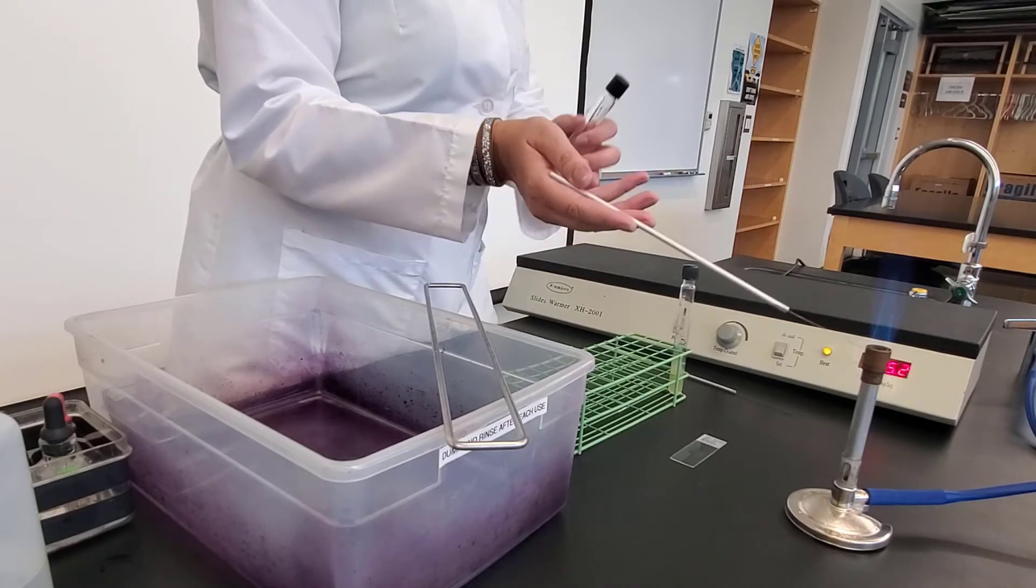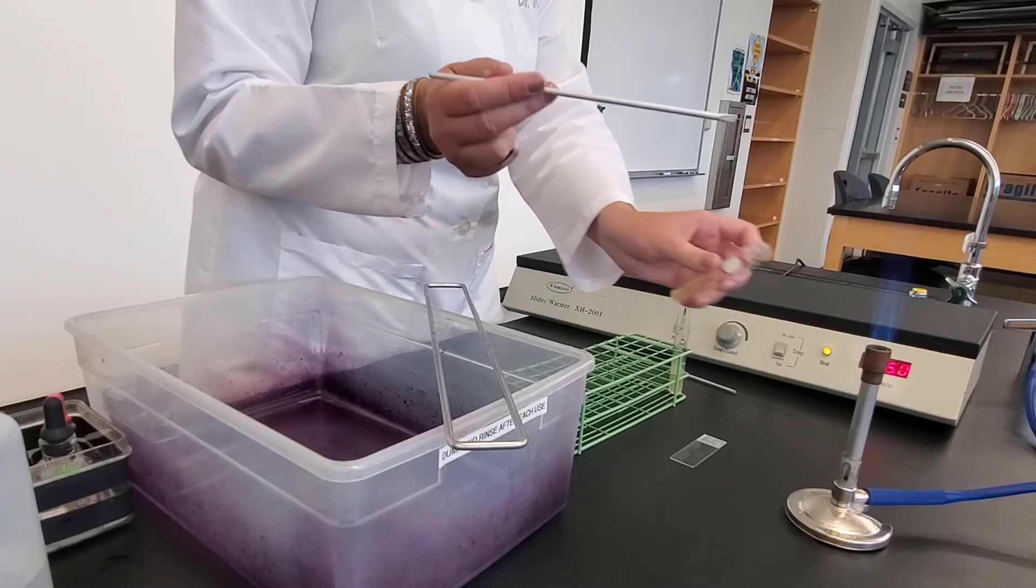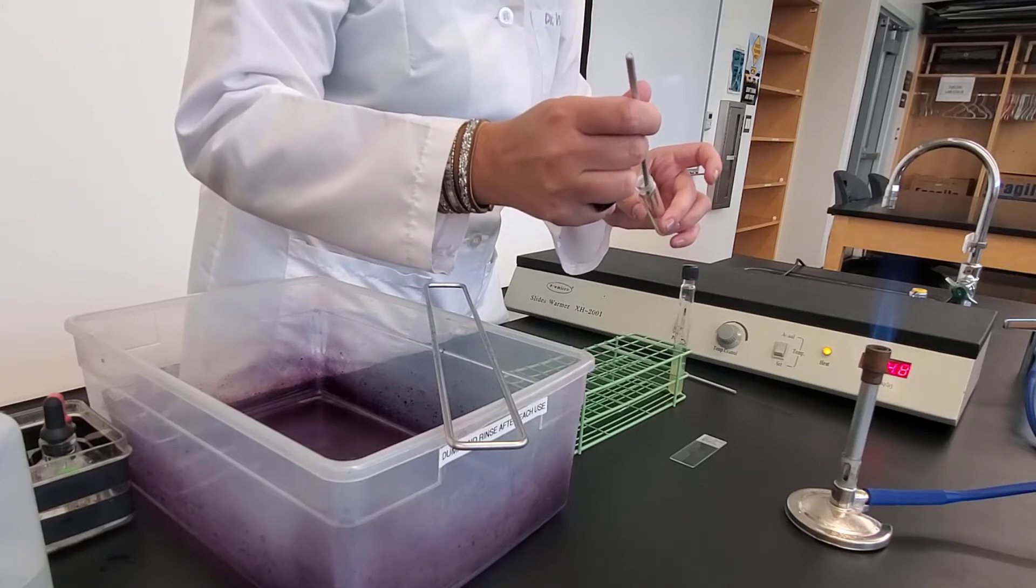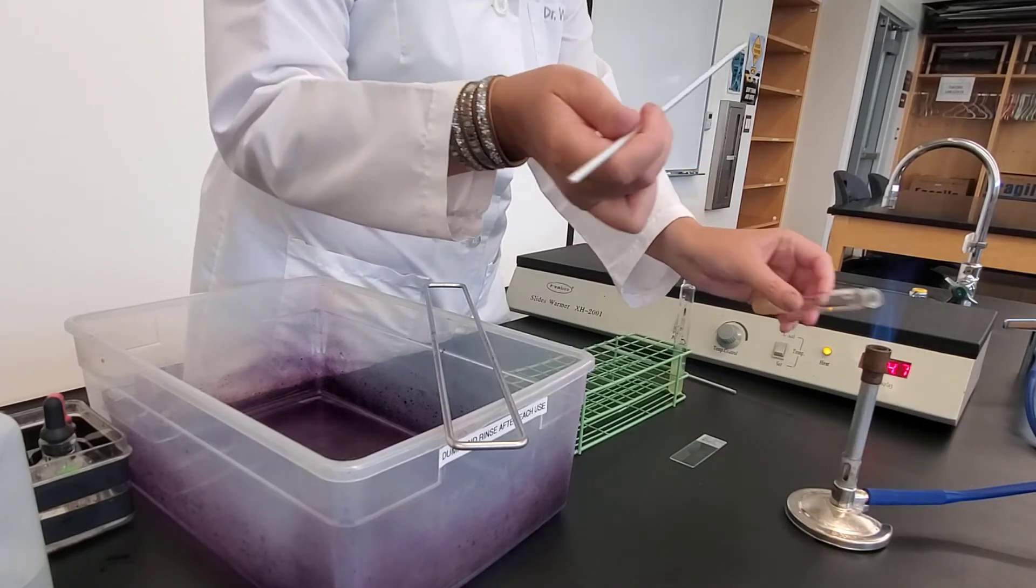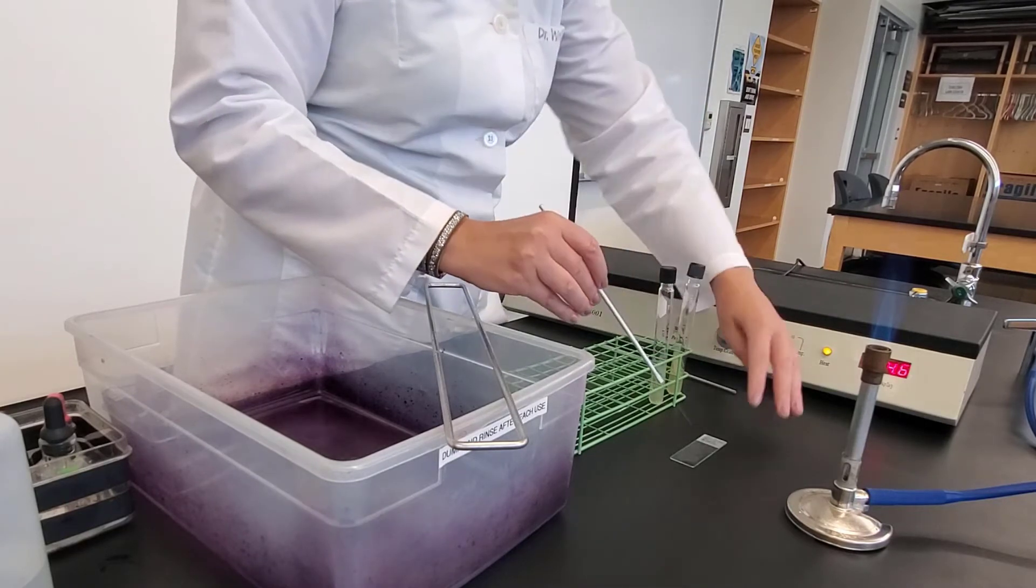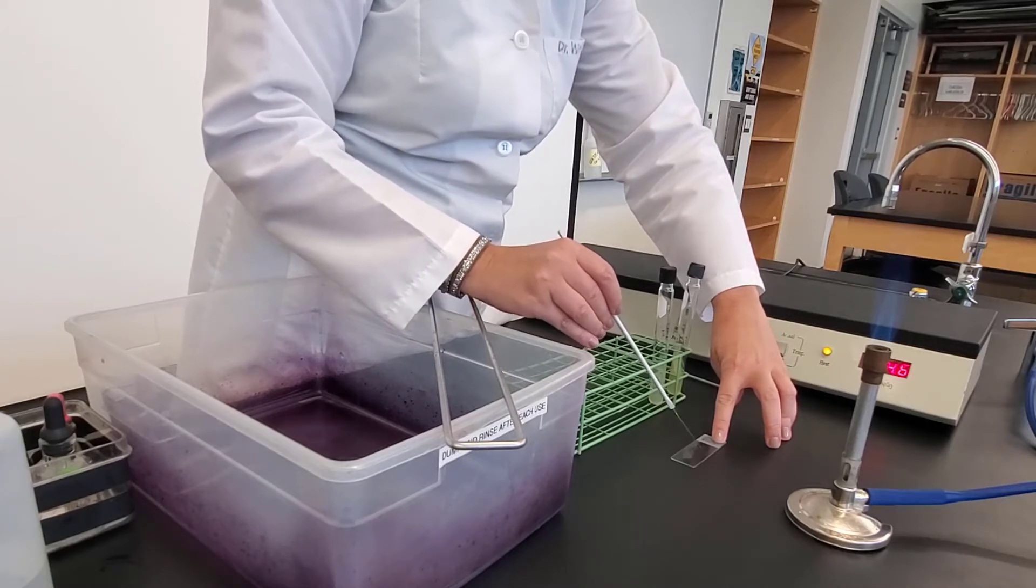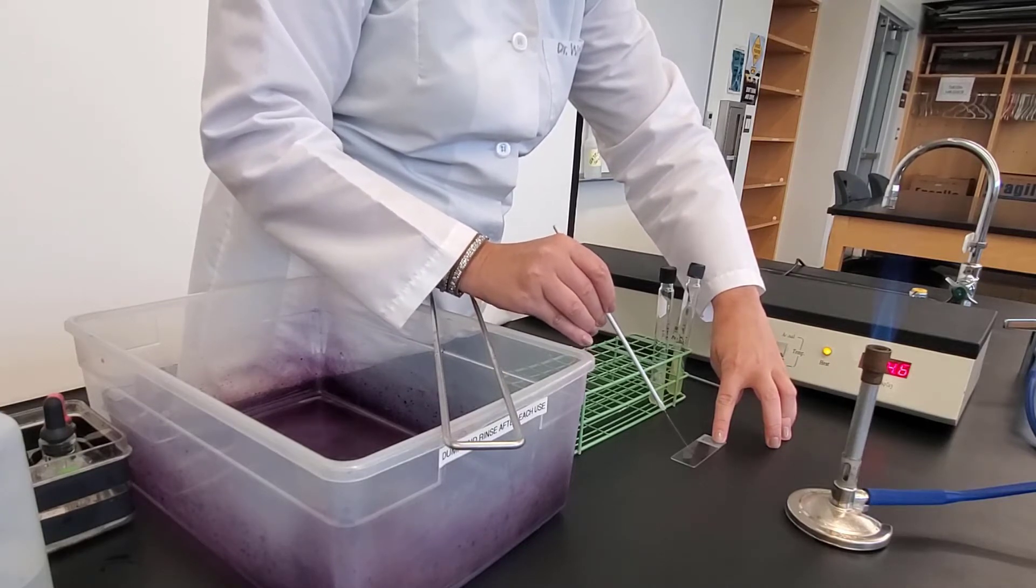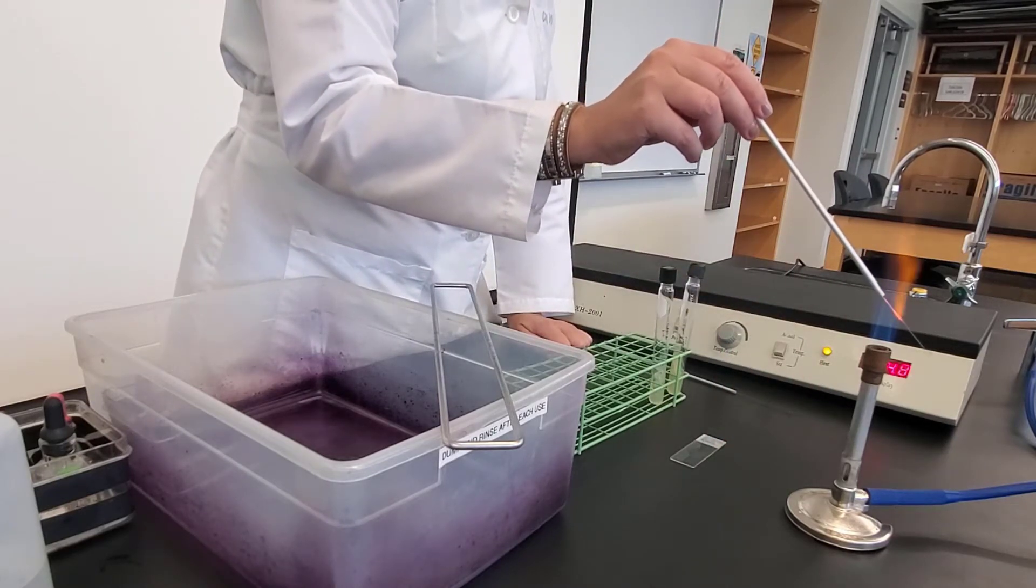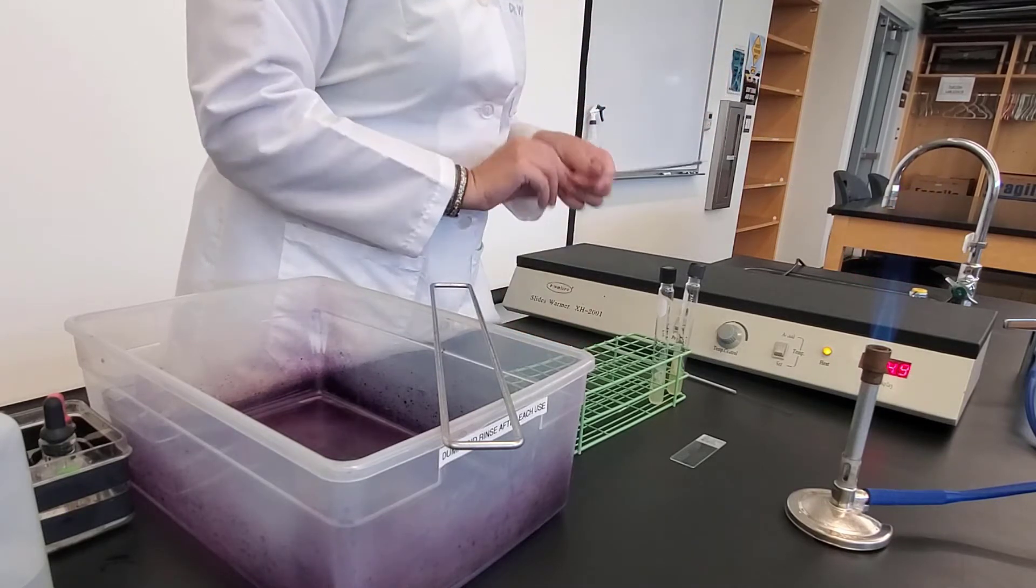So once my needle is cooled, again, I'm going to take the cap between my pinky and my ring finger. Flame it. Go in. Pick up a little bit of bacteria. I don't need a lot. Flame it. Cap. And then swirl it in the water. I'm going to flame sterilize my needle.